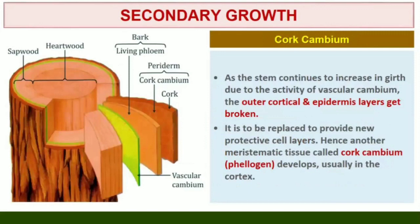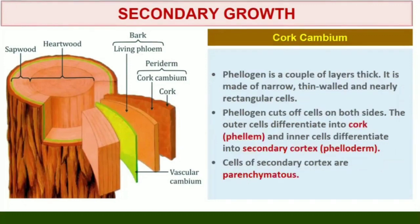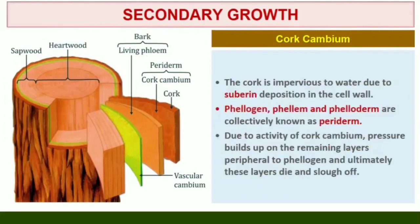Cork cambium: As the stem continues to increase in girth due to the activity of vascular cambium, the outer cortical and epidermis layers get broken and need to be replaced to provide new protective cell layers. Hence, sooner or later, another meristematic tissue called cork cambium or phellogen develops, usually in the cortex region. Phellogen is a couple of layers thick and is made of narrow, thin-walled and nearly rectangular cells. Phellogen cuts off cells on both sides: the outer cells differentiate into cork or phellem, while the inner cells differentiate into secondary cortex or phelloderm. The cork is impervious to water due to suberin deposition in the cell wall. The cells of secondary cortex are parenchymatous. Phellogen, phellem, and phelloderm are collectively known as periderm.